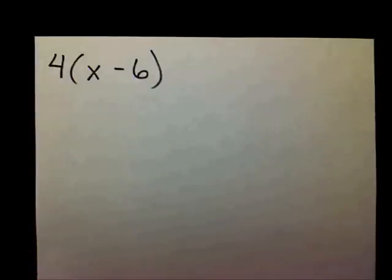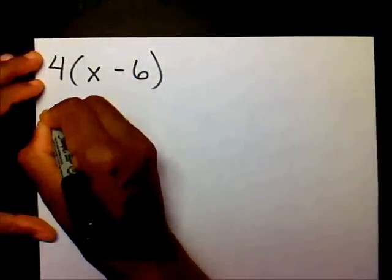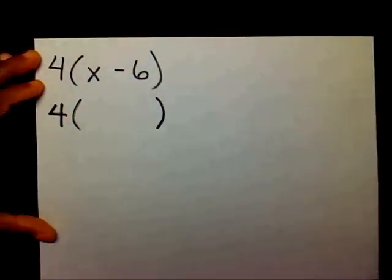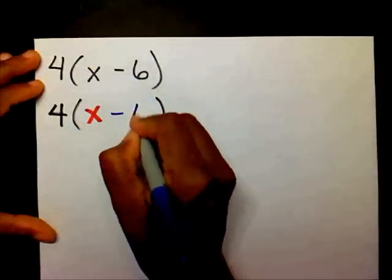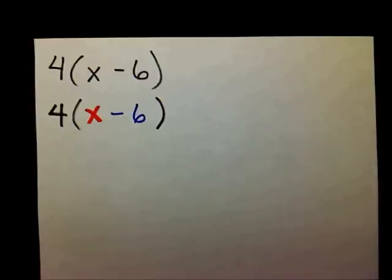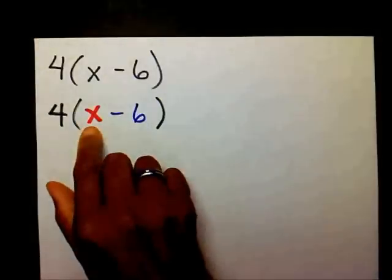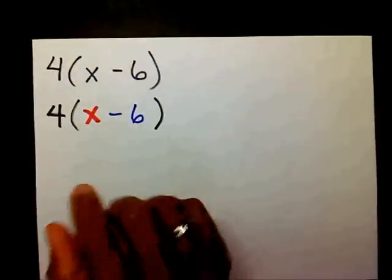I want to rewrite this to show that you have three different terms. You have a 4, and then in parentheses you have an x and a minus 6. What we want to do is take the 4 on the outside and multiply it times the x, and then multiply it times the negative 6.